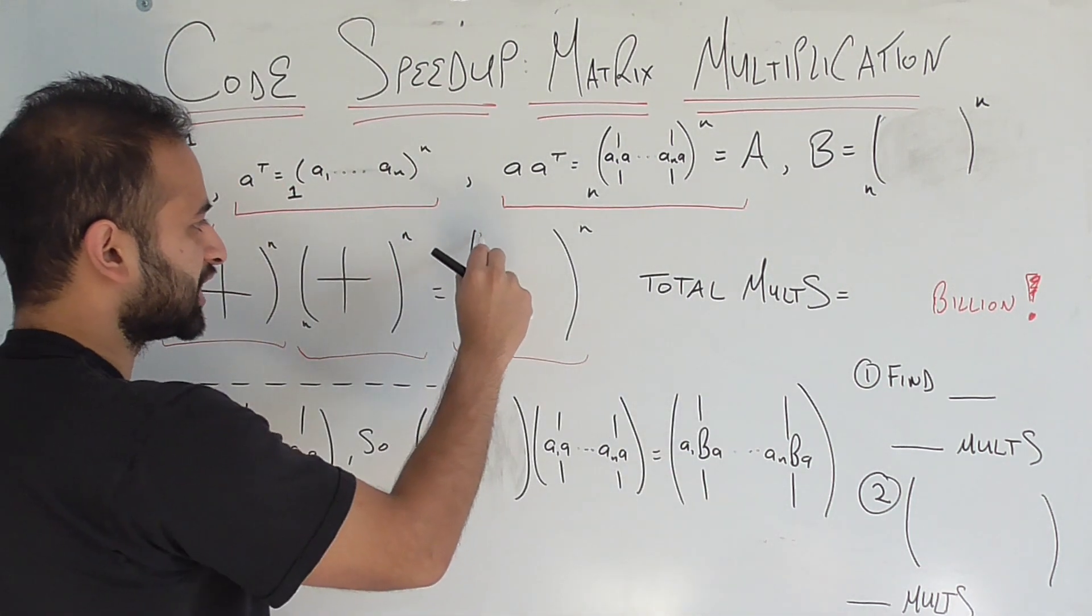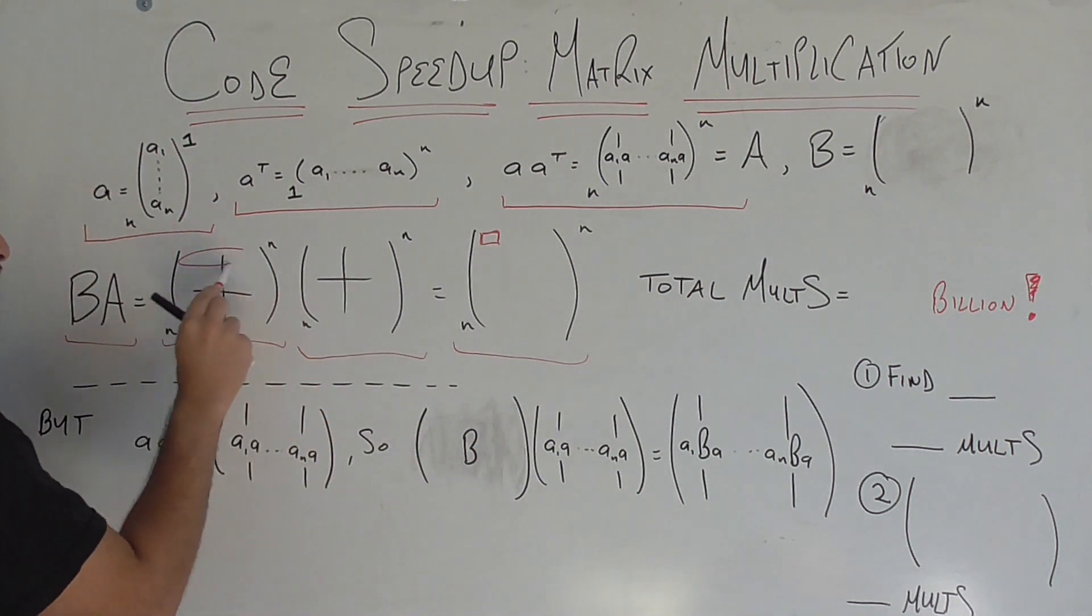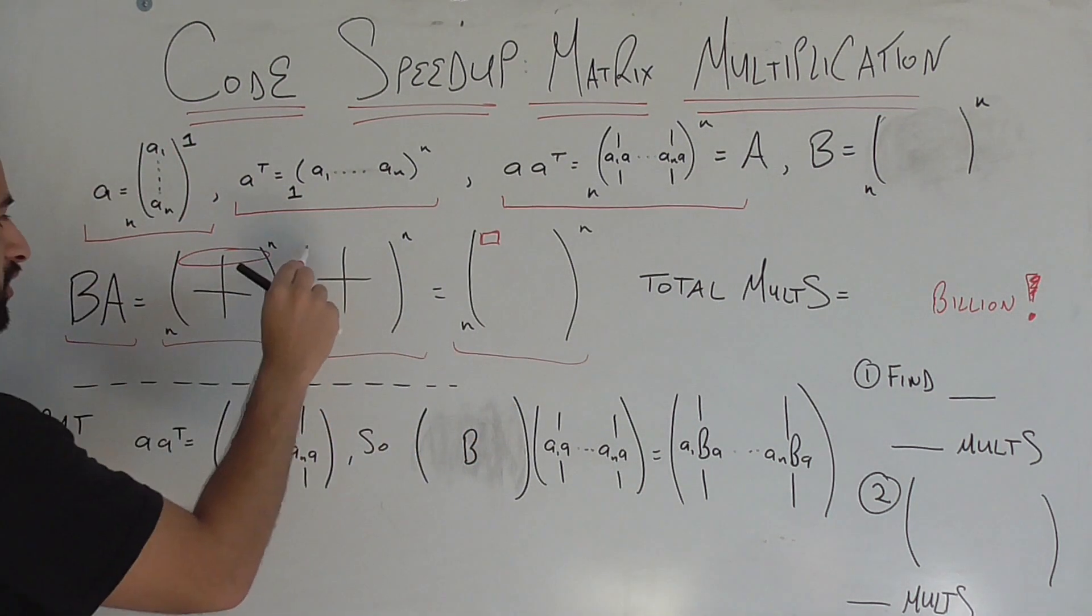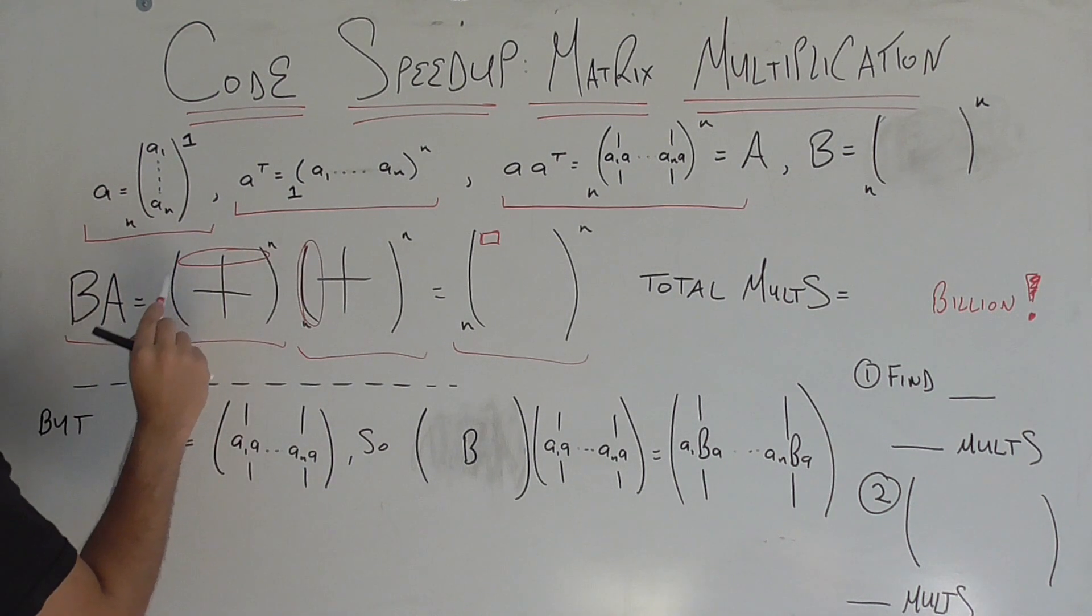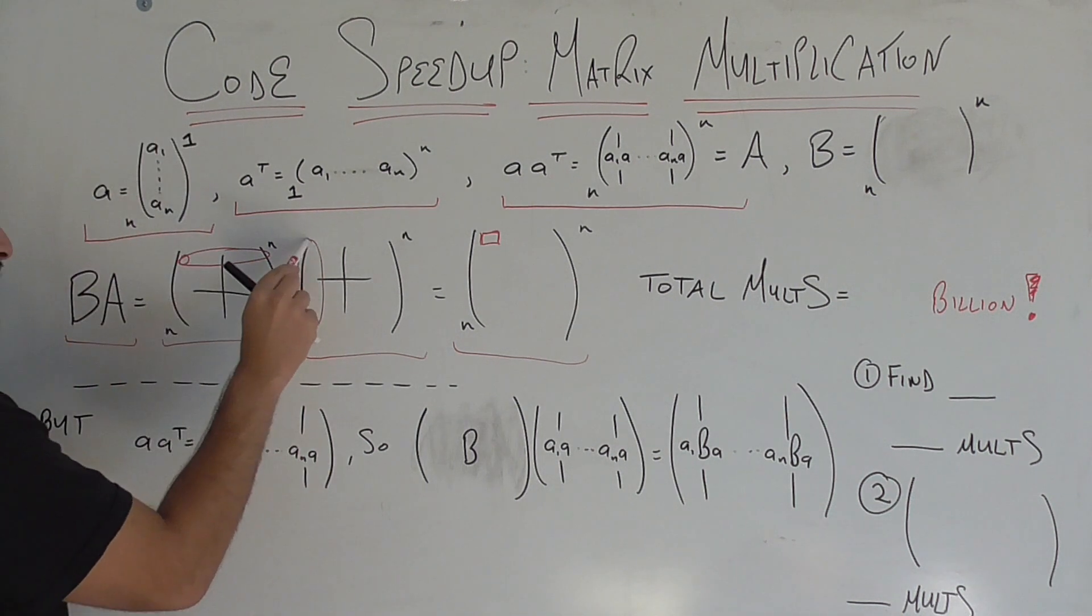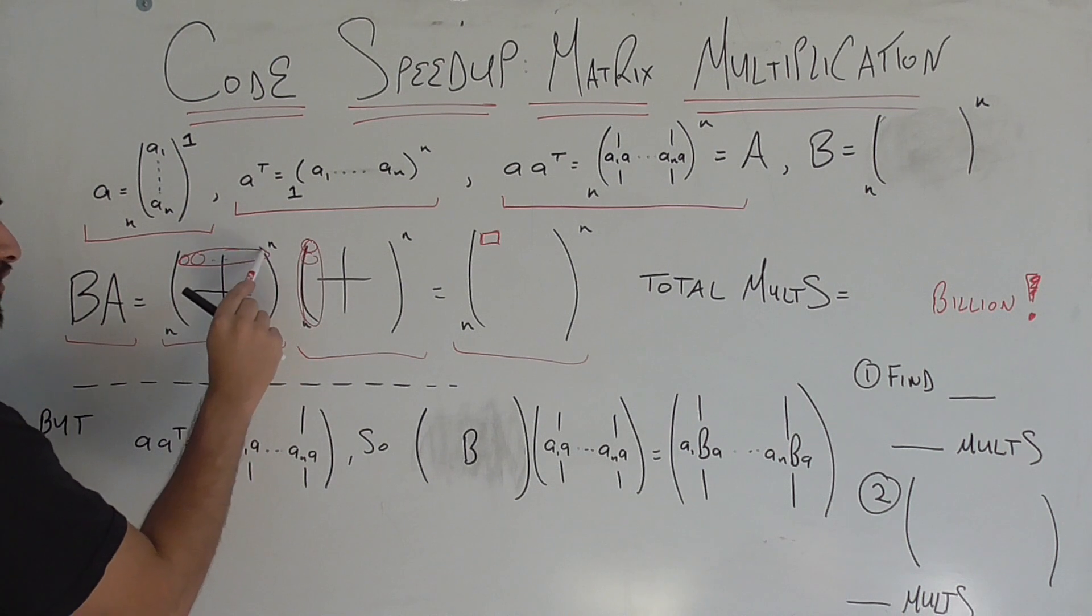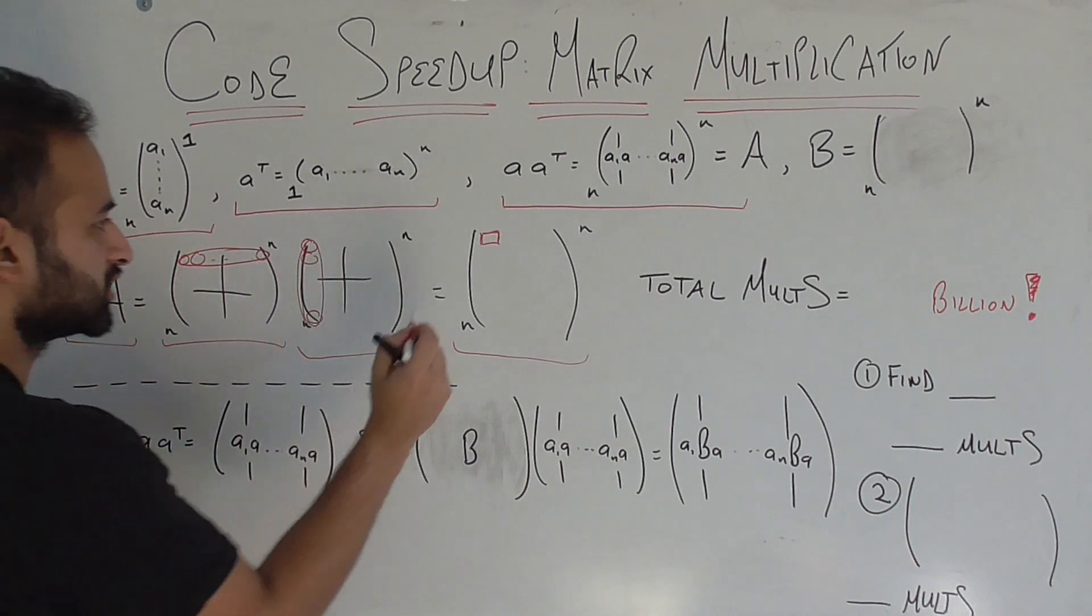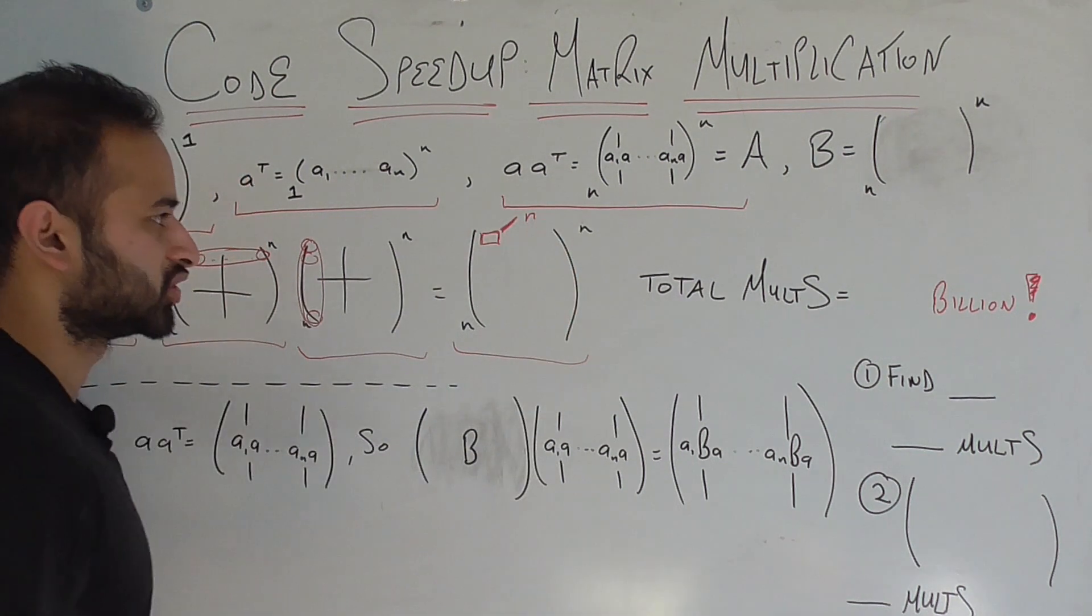So for example if I want to find this first element of my product matrix, I'm going to need to do the dot product of the first row of B with the first column of A. And that's going to require 5,000 multiplications if n is 5,000. Right? Because it's this element times this element. That's one multiplication. This element times this element. That's another one. And there's 5,000 elements here.